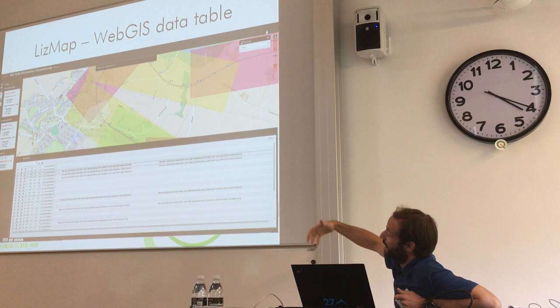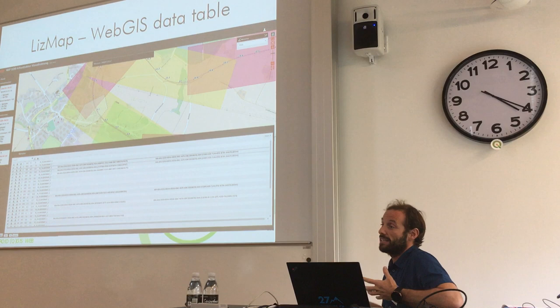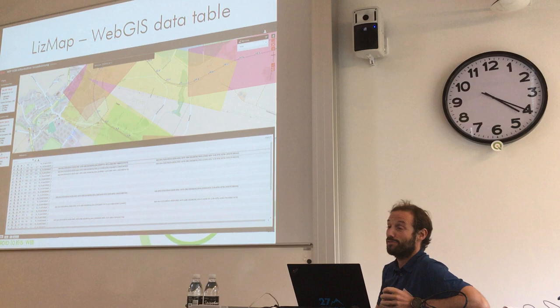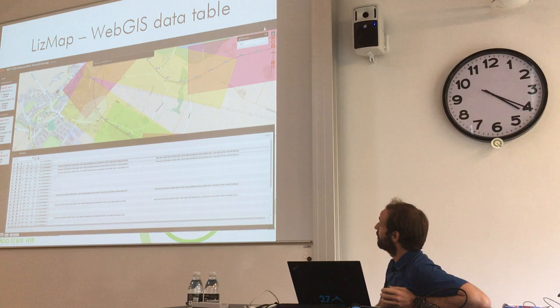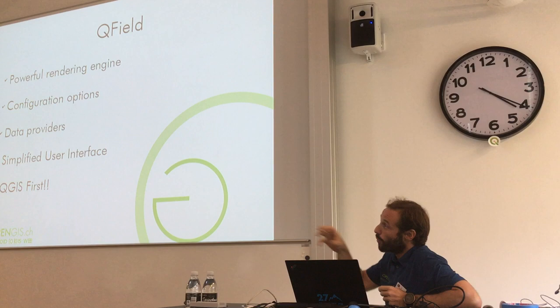Lizmap can show the attribute table of the data, location, measurement tools, whatever you want. If it doesn't have a feature, the folks at 3Liz are probably very happy if you write a pull request or do anything that helps them develop features. Now, as I'm not very interested in the features themselves of what the web GIS does, but rather how they work together, I'm moving on to QField.